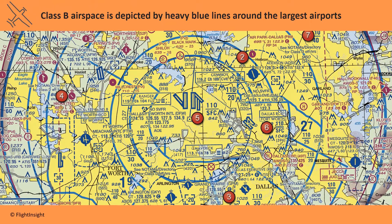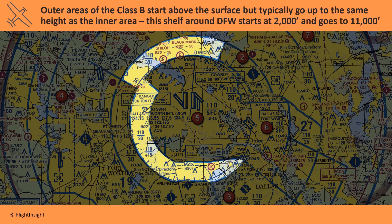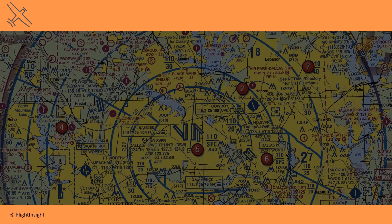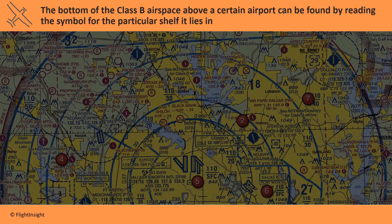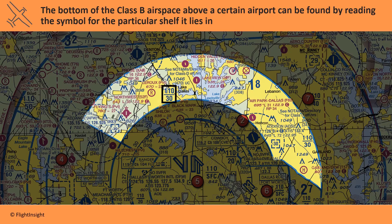Here's DFW Airport in Texas. The innermost area around the airport starts at the surface and goes up. The Class B immediately around DFW goes from the surface to 11,000 feet MSL. Outer areas of the Class B start above the surface but typically go up to the same height as the inner area. This shelf around DFW starts at 2,000 feet and goes up to 11,000 feet. Lakeview Airport lies below Bravo airspace which starts at 3,000 feet directly above it.